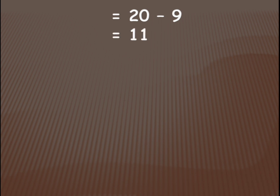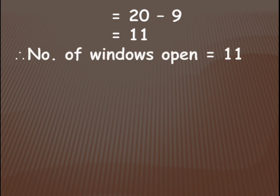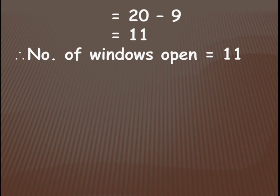So how many windows are open? 11 windows are open. You will write: therefore, number of windows open is equal to 11. That's how you do subtraction story problems. Let's see one more.